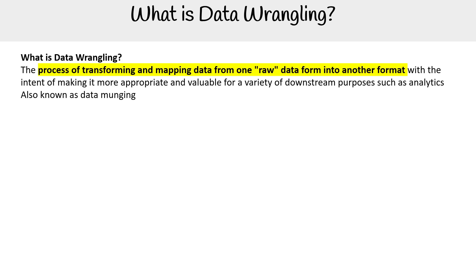Let's take a look at data wrangling. This is the process of transforming and mapping data from one raw data form into another format, with the intent of making it more appropriate and valuable for a variety of downstream purposes, such as analytics. It's also known as data munging — I don't know who comes up with all these terms, they're crazy.